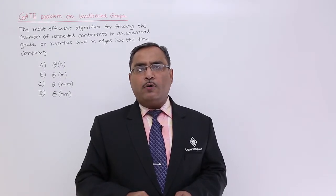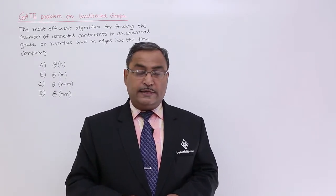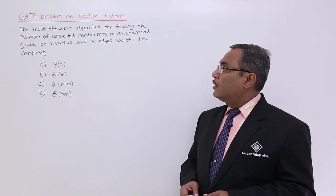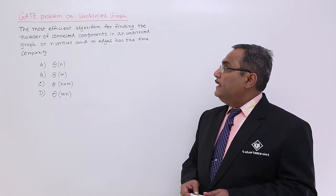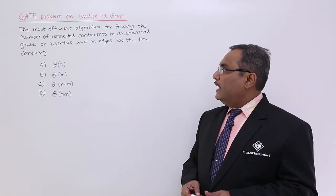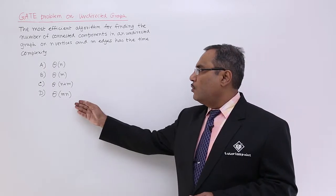Let us solve another great problem on connected graphs. The most efficient algorithm for finding the number of connected components in an undirected graph on n vertices and m edges has the time complexity. Four options are given.